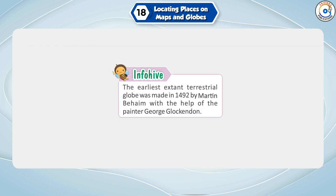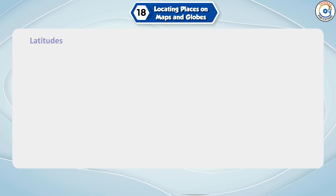The earliest extant terrestrial globe was made in 1492 by Martin Behaim with the help of the painter George Glockendon.